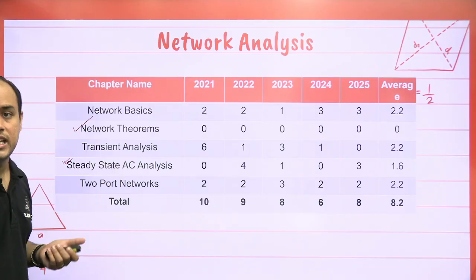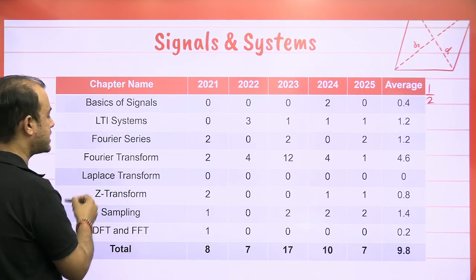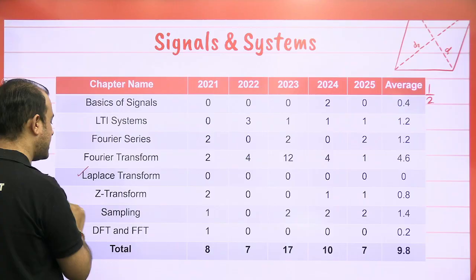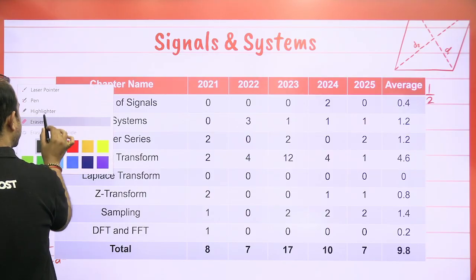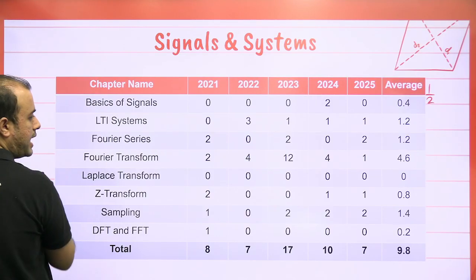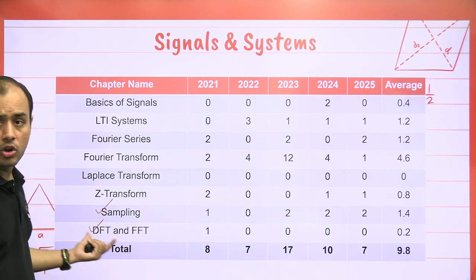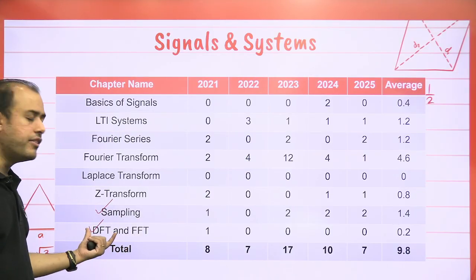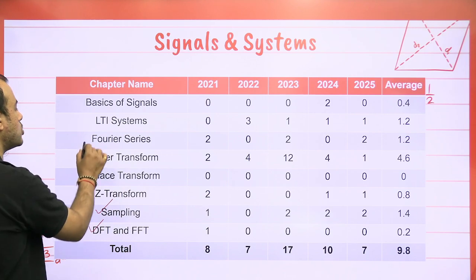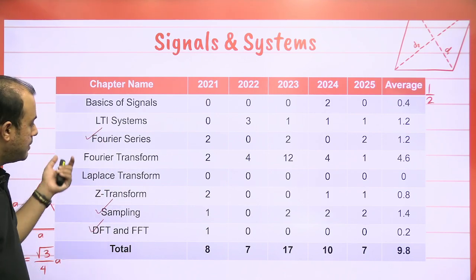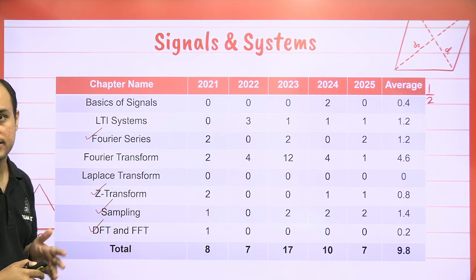In Signals and Systems for ECE, you cannot skip the basics. You can skip Laplace, but again Laplace will be used in Control Systems, so I will not ask you to skip it. You can skip Sampling and DFT/FFT — only one question is asked from DFT/FFT every year. You can skip the Fourier Series and Z-Transform, but cover basic LTI System, Fourier Transform, and Laplace.